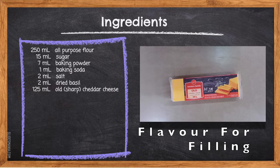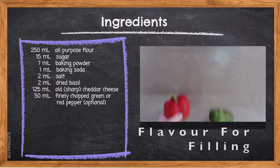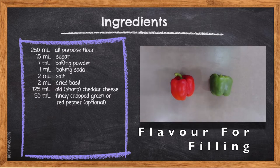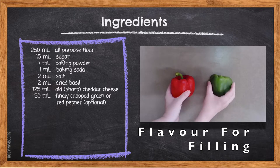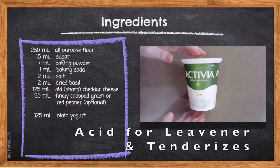125 milliliters old sharp cheddar cheese — sharp cheddar is aged longer than regular cheese and has a bolder, more dominant flavor. This allows us to use less cheese in our recipe and reduce fat content while still having a big bold flavor. 50 milliliters finely chopped green or red pepper — optional. Peppers are high in iron and vitamin C; in fact, they have two to four times the amount of vitamin C than an orange.